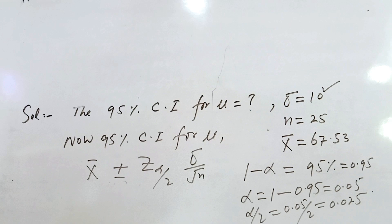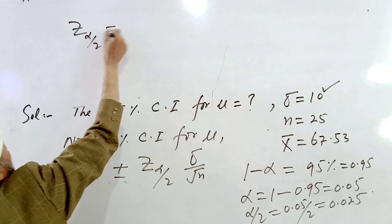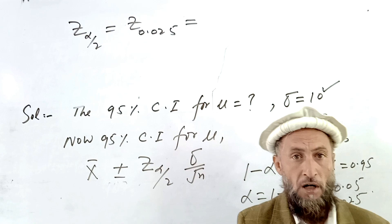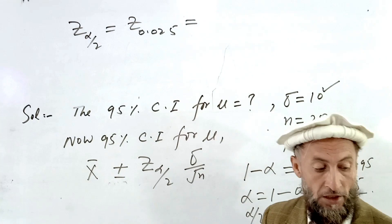We are finding Z sub alpha over 2, where alpha over 2 equals 0.025. We check this value in the Student's t-distribution table available on page number 244 of the statistics Part 2 book.